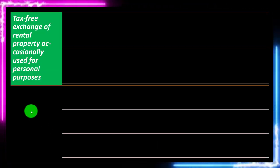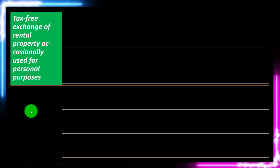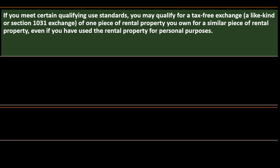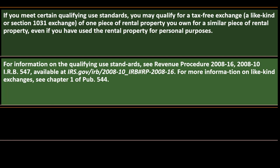You can find those on the IRS website, irs.gov. Tax-free exchange of rental property occasionally used for personal purposes: if you meet certain qualifying use standards, you may qualify for a tax-free exchange — a like-kind or Section 1031 exchange — of one piece of rental property for a similar piece of property, even if you have used the rental property for personal purposes. Exchanging the property may be a way to remove or at least defer the taxation on it. For information on the qualified use standards, see Revenue Procedure 2008-16, 2008-10 IRB 547, available on the IRS website.